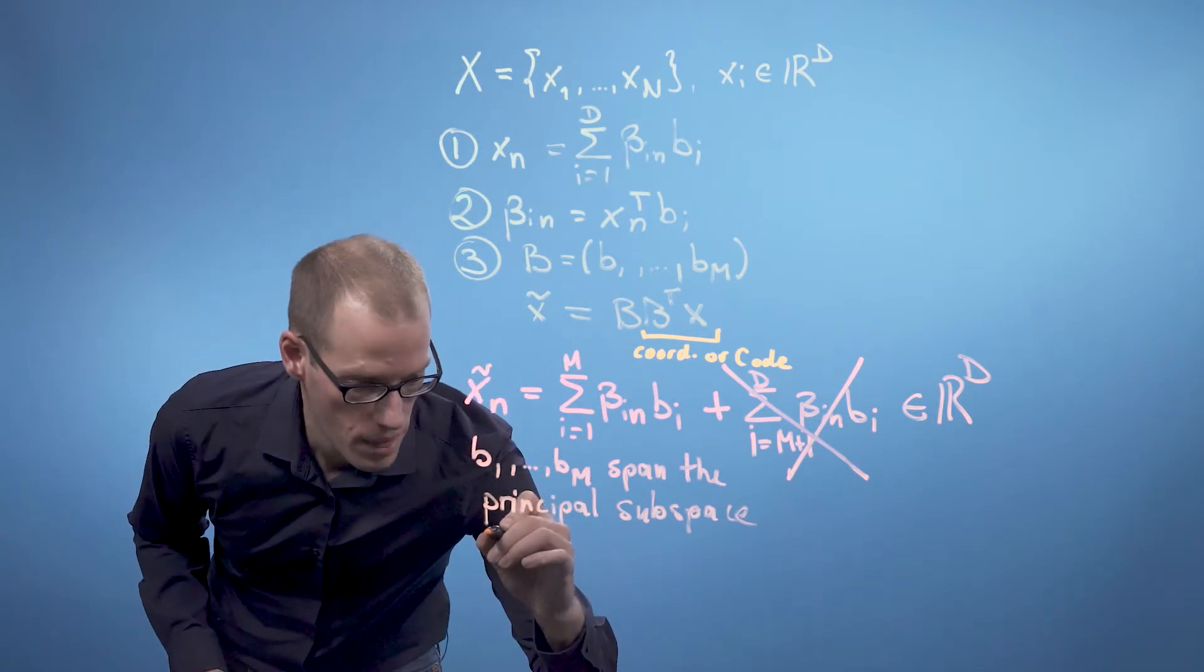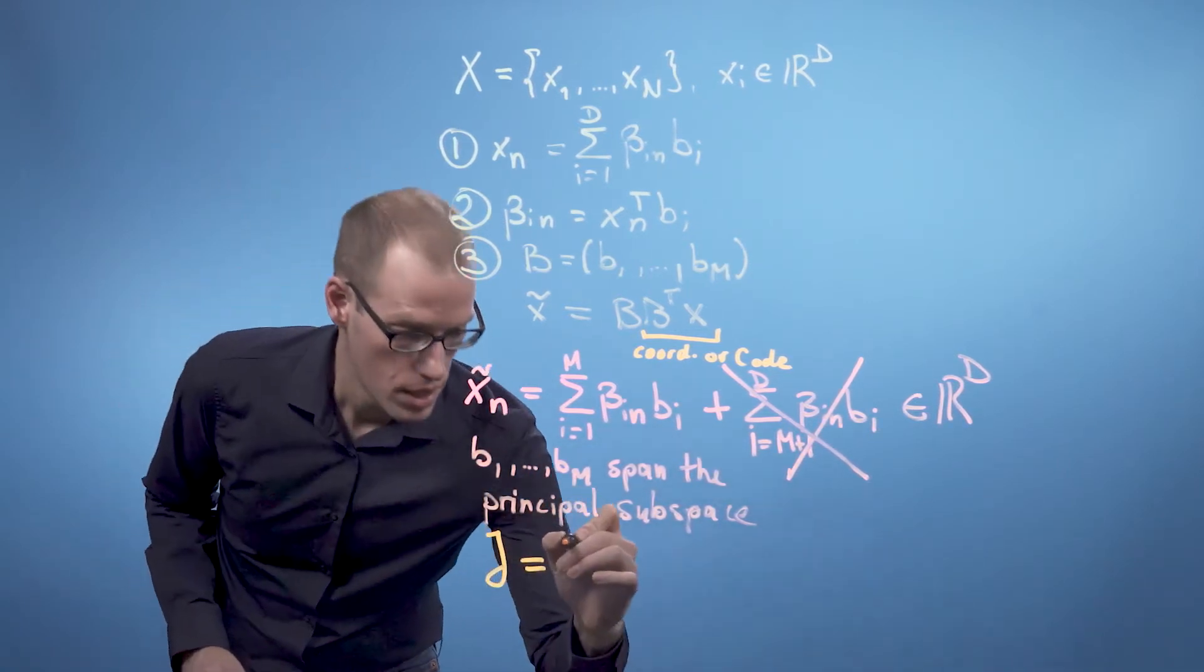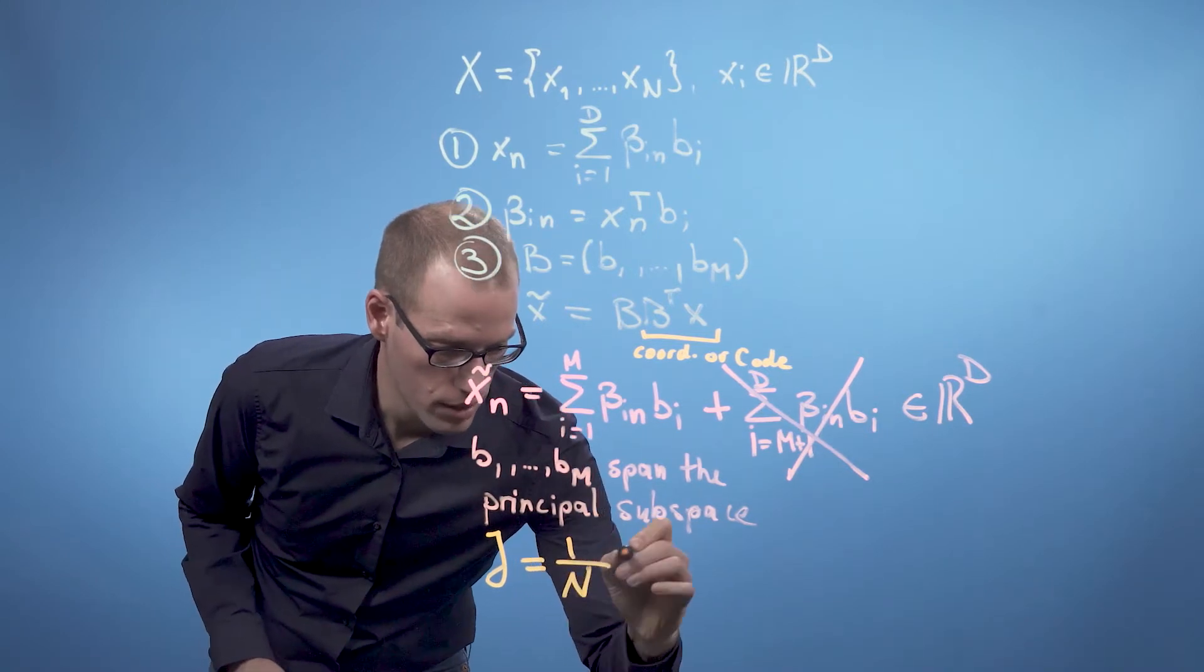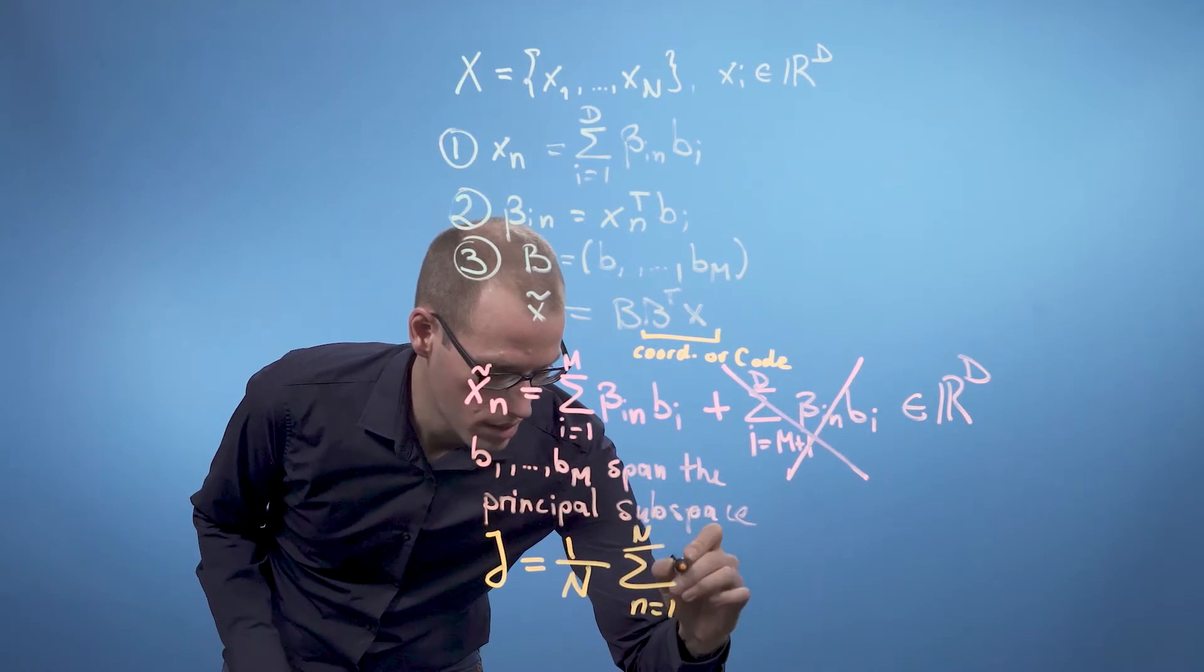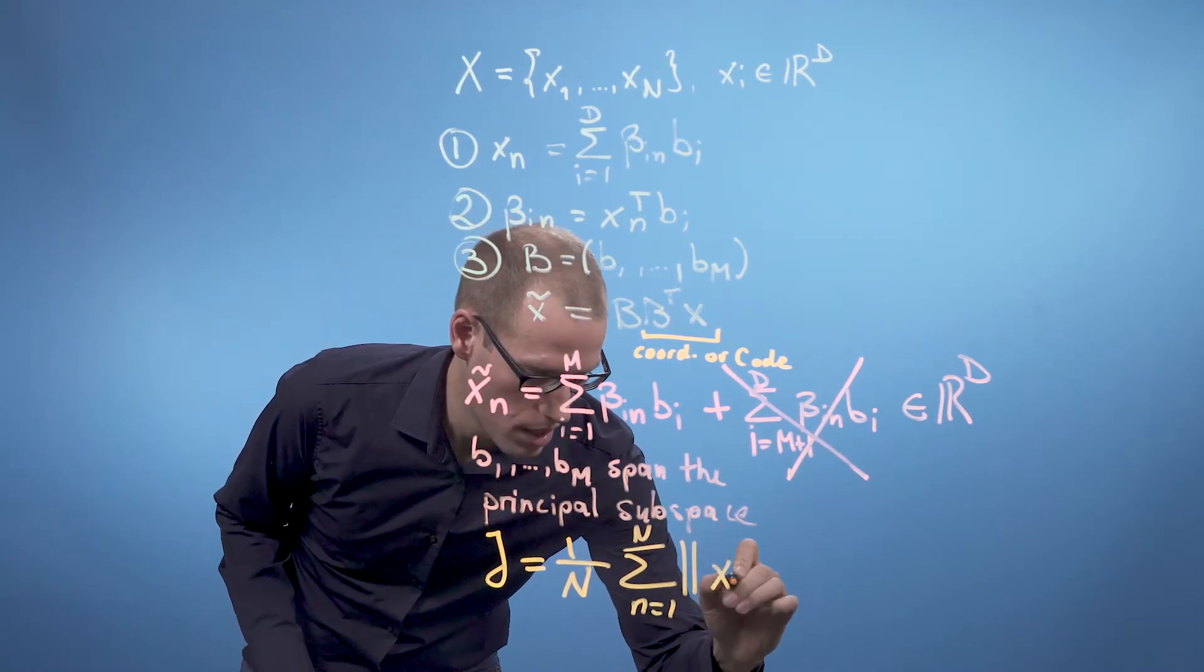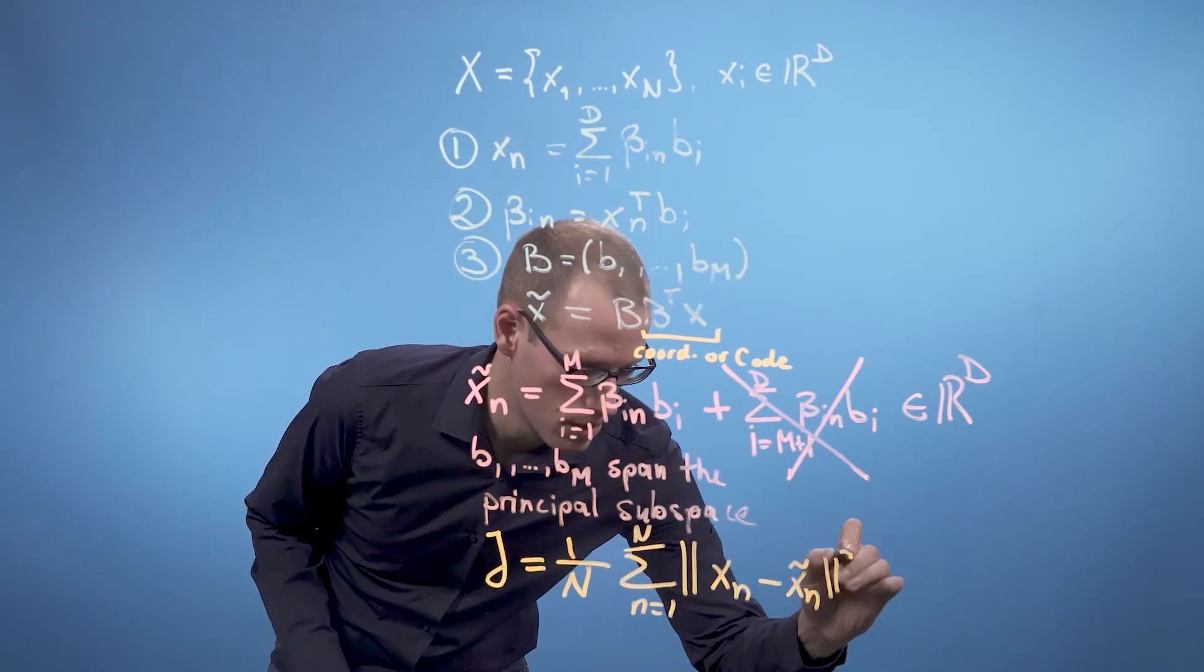And we can write the average squared reconstruction error as follows. We can write J, that's the average squared reconstruction error, is going to be 1 over n times the sum from n equals 1 to n. And then we write ||X_n minus X_n tilde||^2.